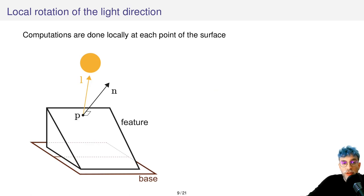All our computations are done locally as I said, so let's say I want to enhance this feature here that lies on what we call the base. The base is actually a smoother version of the surface.